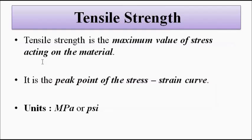First is tensile strength. Tensile strength is the maximum value of stress acting on the material under a tensile test — the maximum stress which the material can withstand without undergoing fracture. Fracture means the disintegration of the material, the point at which the material breaks down. So the maximum value of stress which a material can withstand without undergoing fracture is called the tensile strength. It is the peak of the stress-strain curve. The unit of tensile strength is megapascal or pounds per square inch (psi).